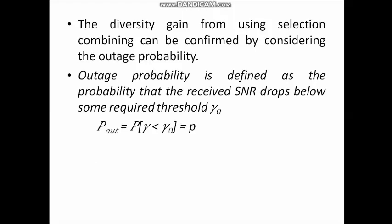Next, let us see how selection combining gives diversity gain and how the outage probability is reduced. The diversity gain from using selection combining can be confirmed by considering the outage probability. Let us consider the received SNR denoted by gamma and the threshold SNR denoted by gamma0. Outage probability is defined as the probability that the received SNR drops below some required threshold gamma0. In equation form: P_out = P(gamma < gamma0), which equals small p.